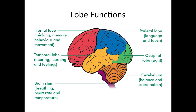The parietal lobe deals with a lot of language and touch. The temporal lobe is about hearing, learning, and feelings. The occipital lobe is about sight — most of our visual processing happens there, and that's really most of what it's devoted to.